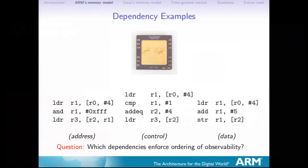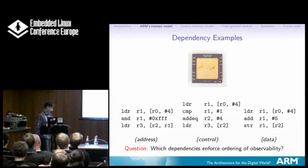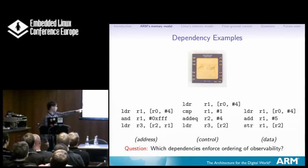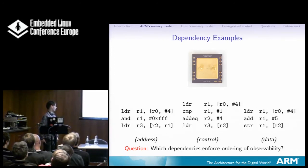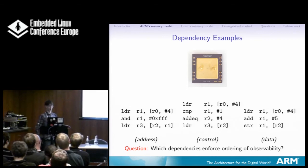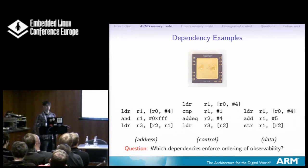Here are ARM assembly examples. Address dependency: you've loaded an address, masked out some bits, and loaded based on that — guaranteed to be ordered. Control dependency: you're loading, doing a compare, conditionally manipulating a value and then doing a load. That is not guaranteed to be ordered — you can speculate that second load before the first. So control dependency is not enough; if you're relying on control dependencies, it won't work. It might have worked with old cores that didn't speculate, but it won't anymore. Data dependency: you load, add five to it, and store it back — guaranteed to be ordered.